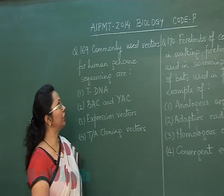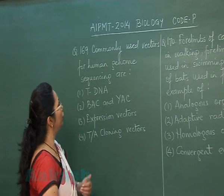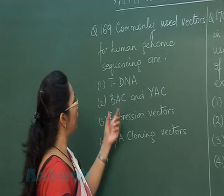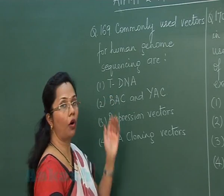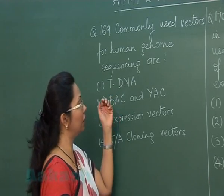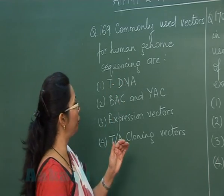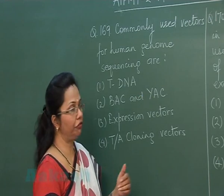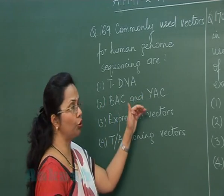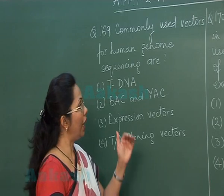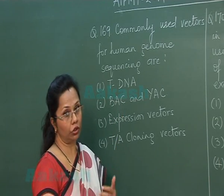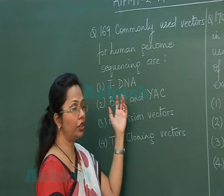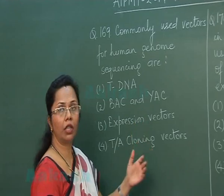Question 169: Commonly used vectors for human genome sequencing. T-DNA is used for transferring genes in plants from Agrobacterium tumefaciens. The second option is Bacterial Artificial Chromosome (BAC) and Yeast Artificial Chromosome (YAC). These two vectors have quite large carrying capacity, and since human genes are also quite large, they could be cloned through BAC and YAC.